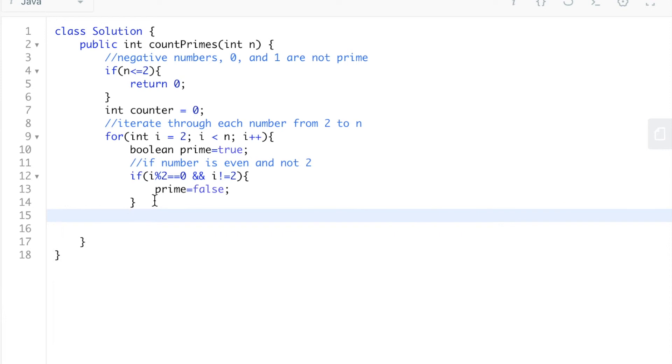Now, as you know, even numbers are not prime, so this if statement is just checking if the number is divisible by 2, and if it is, we know that it is not prime.